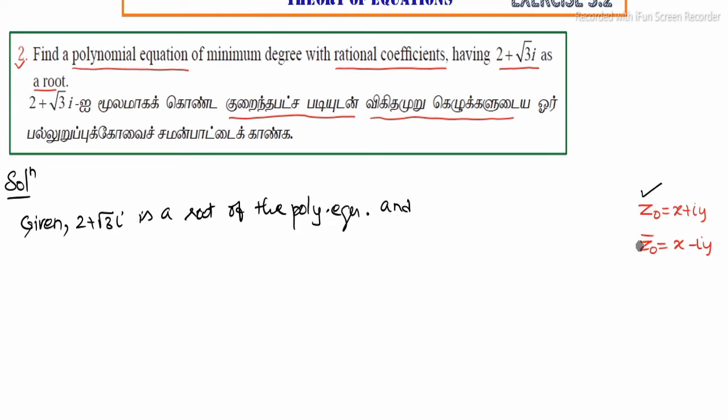Then its conjugate, Z₀ bar, that is, its conjugate 2 minus root 3i is also a root of the polynomial equation.